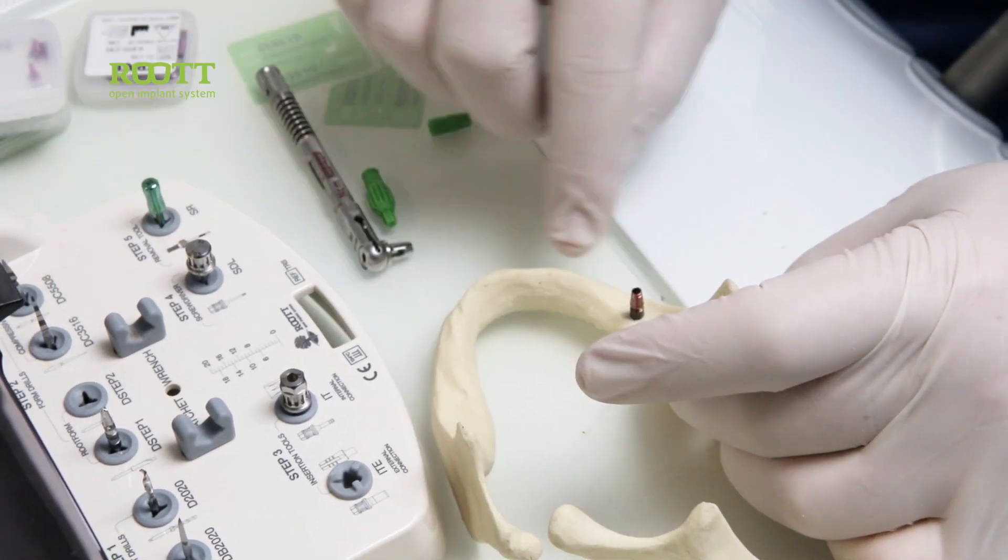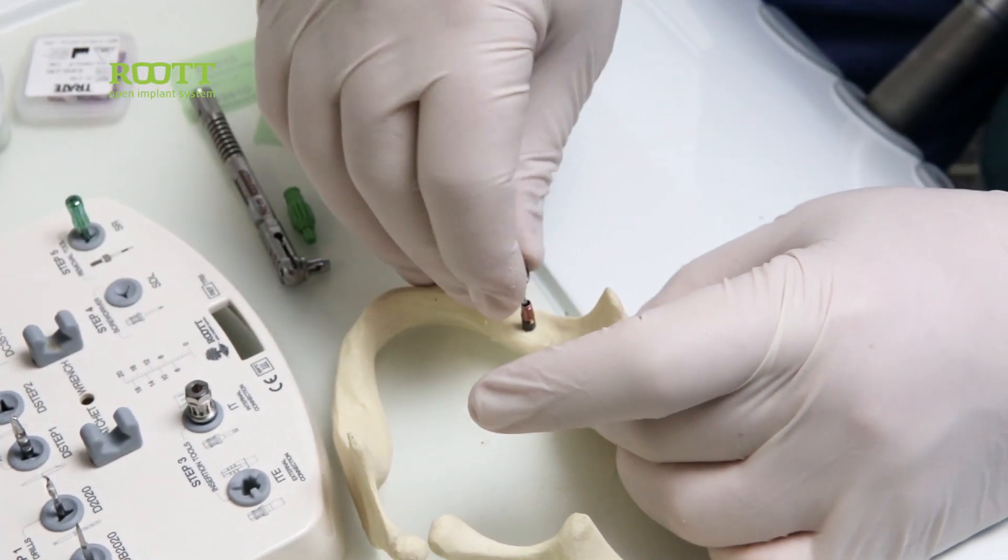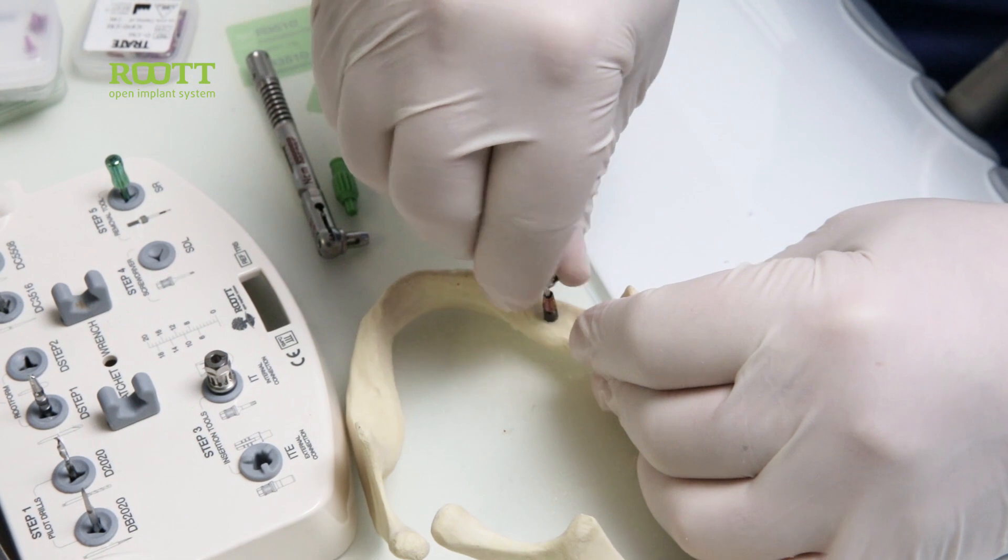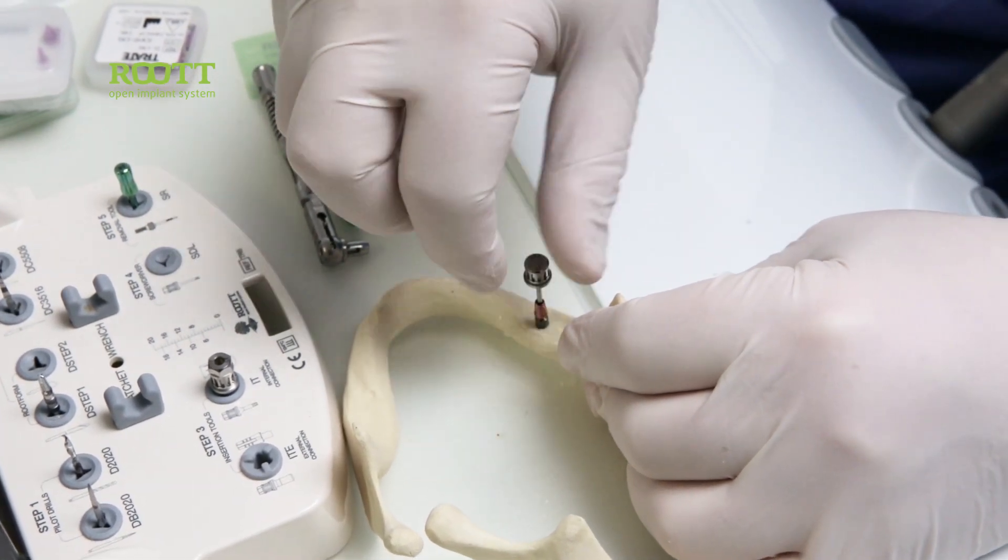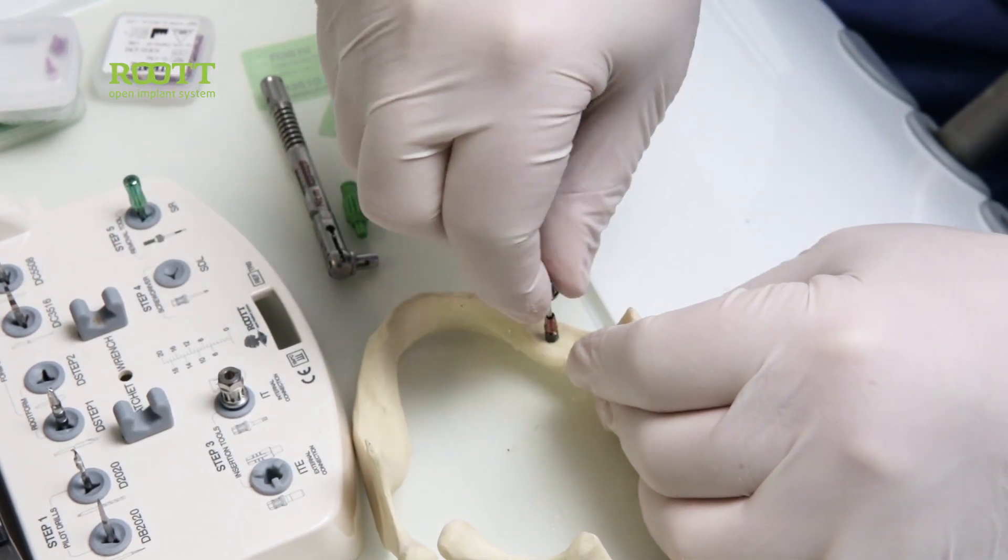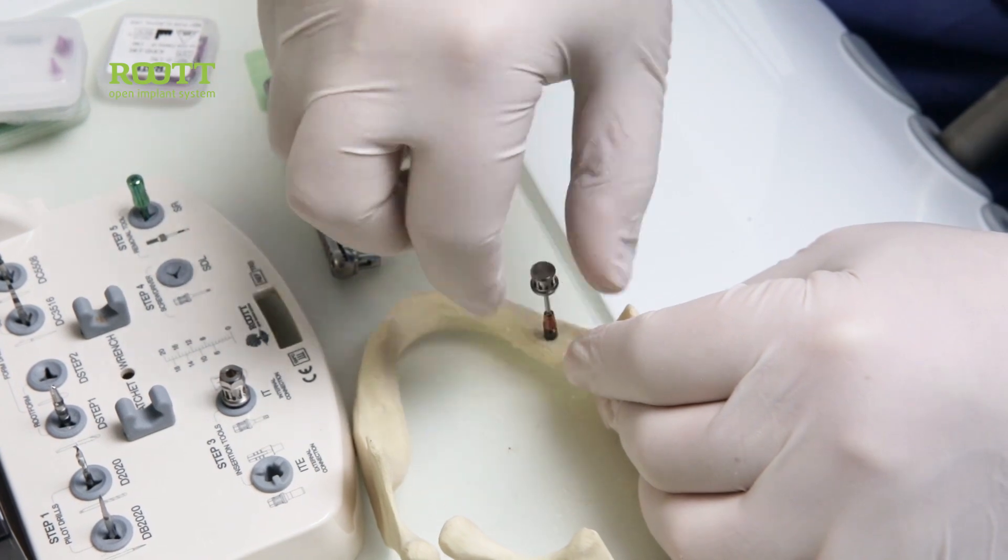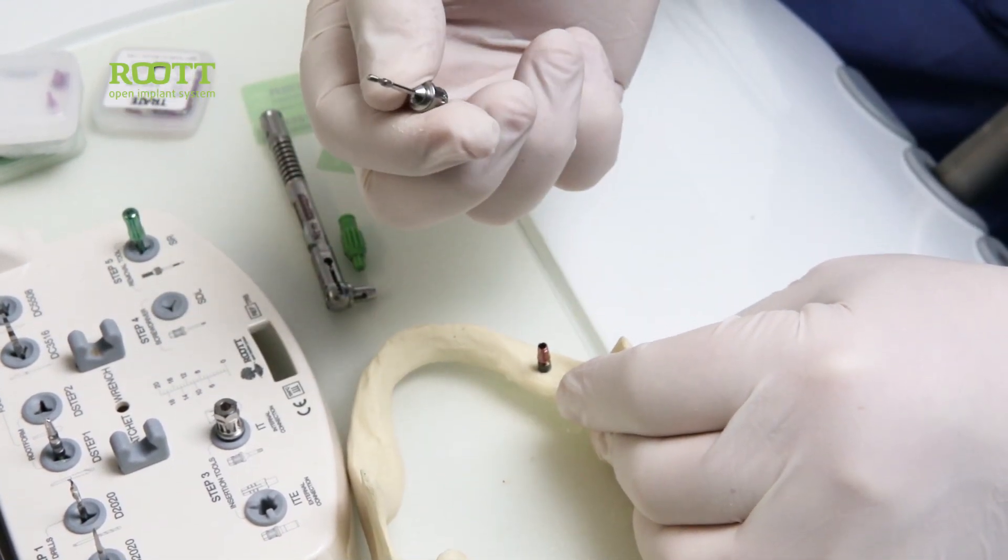So this way, we take out the abutment by using the screwdriver. There is double screw inside, so here now we can hear. We can catch, we must catch the second screw and to take it out.